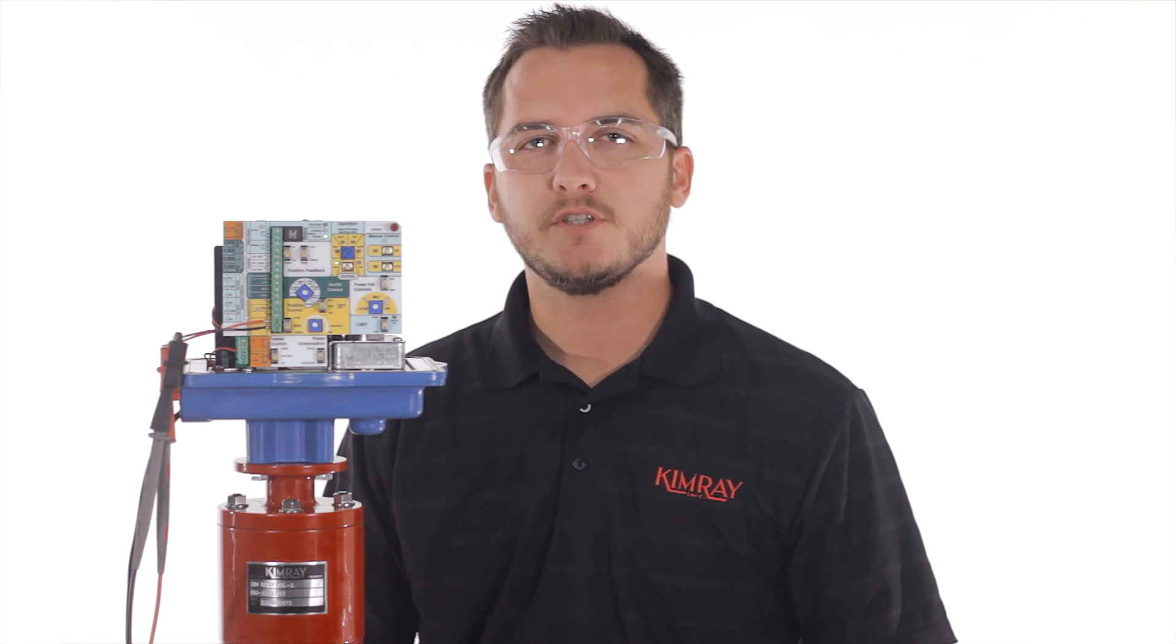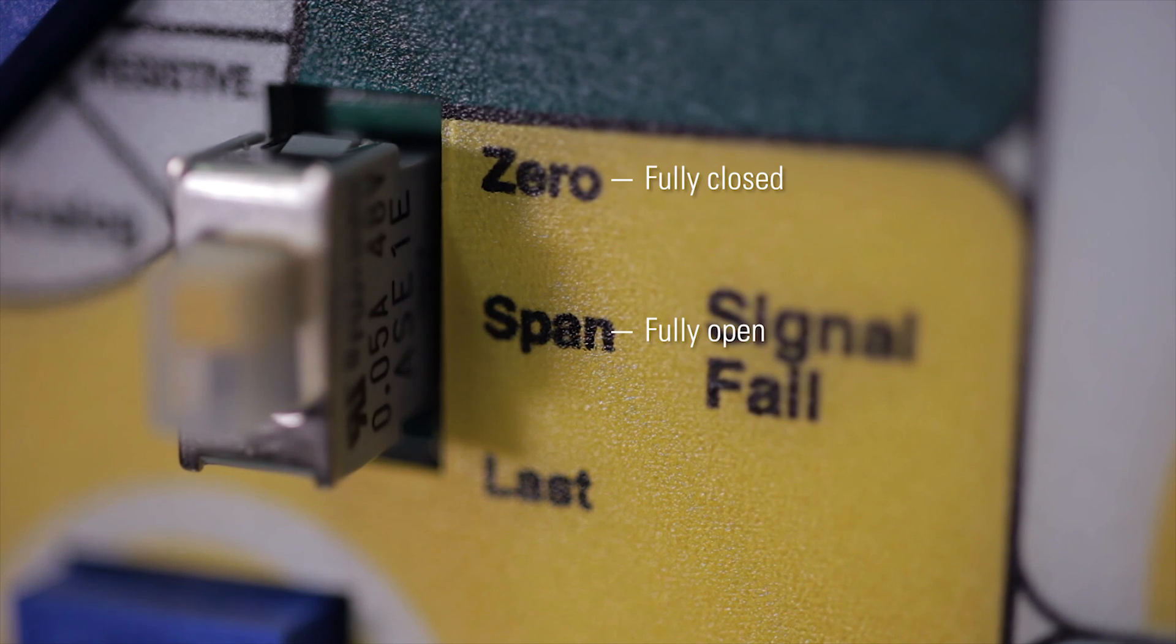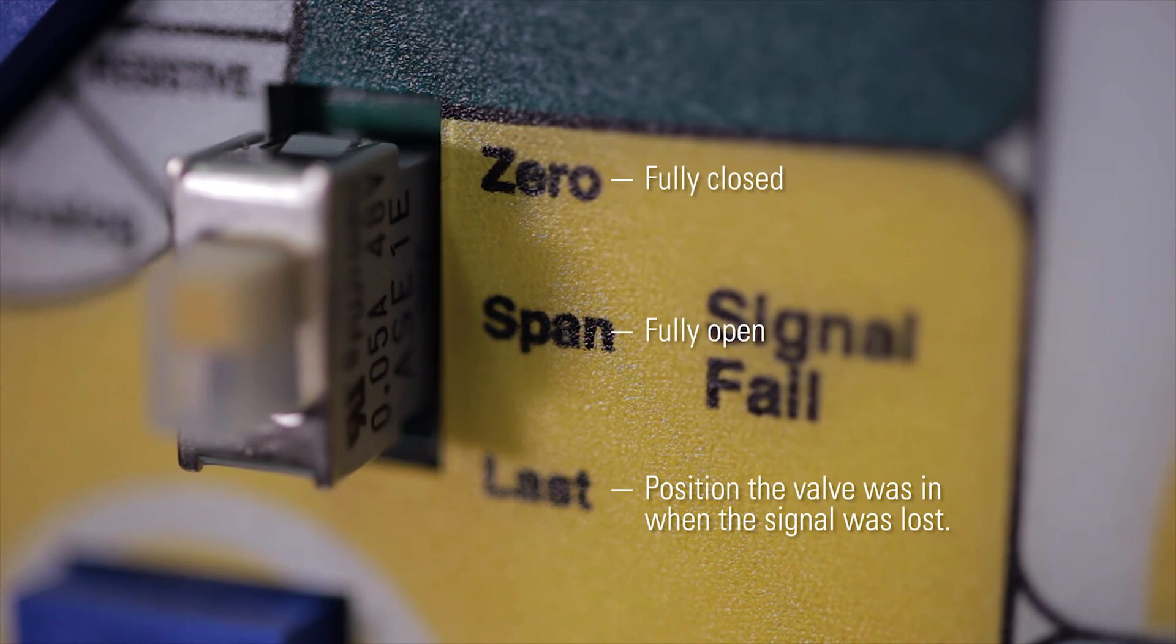If control signal to the actuator is lost but external power is still applied, the signal fail position selector switch provides options for the actuator. Zero, span or last which is the position the valve was in when the signal was lost.